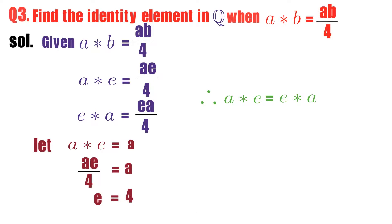Identity element we got it as 4. Is 4 a rational number? Check it. Yes, 4 is a rational number.